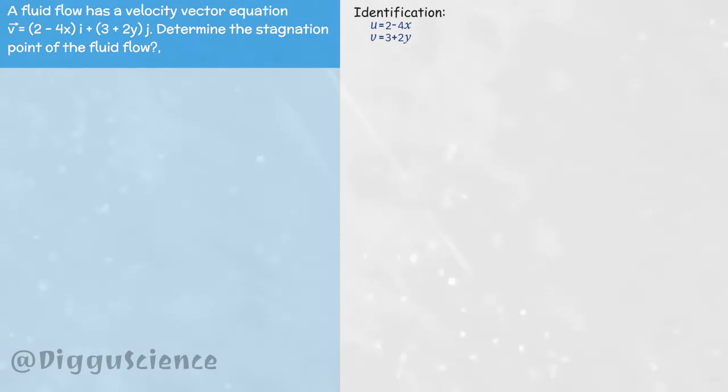Now, we can calculate the location of the stagnation point. At the stagnation point, u equals 0. Plugging in the value of u, 2 minus 4x equals 0. Simplifying this equation, x equals 1 over 2, or 0.5.